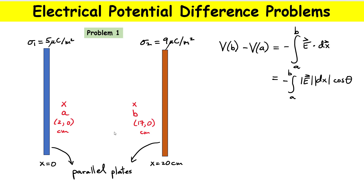Point A is two centimeters away from the left plate, and point B is at 17 centimeters away from that left plate. The distance between both plates is 20 centimeters. Now let's think about the electric field. The blue plate on the left produces an electric field, and within the region I'm interested in it produces a field I'll call E1 pointing to the right.